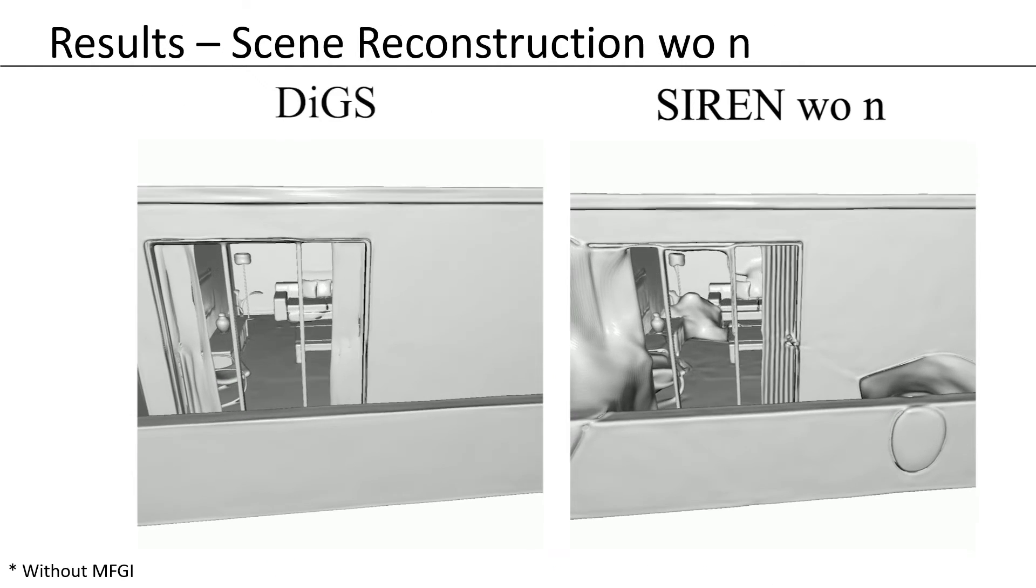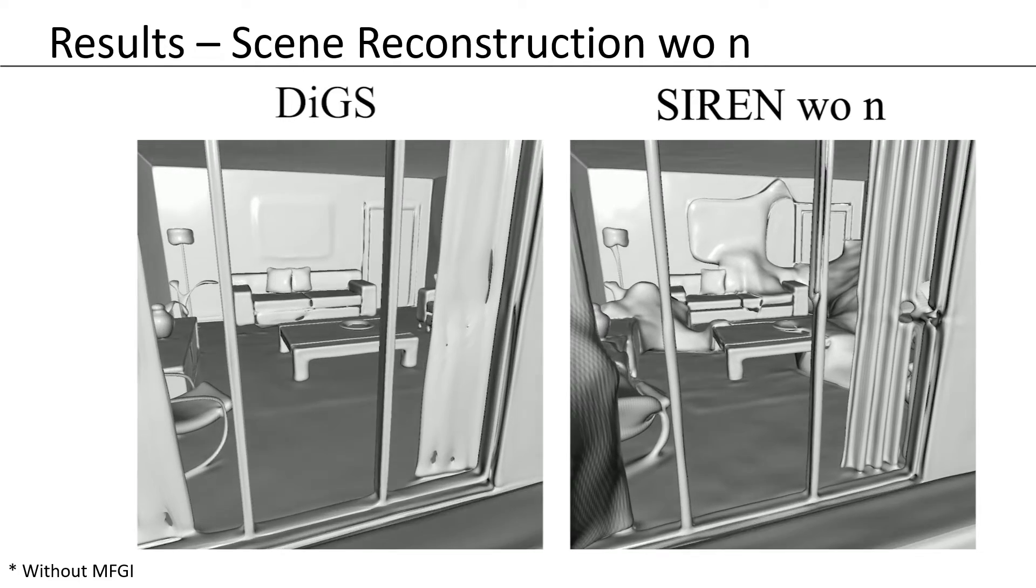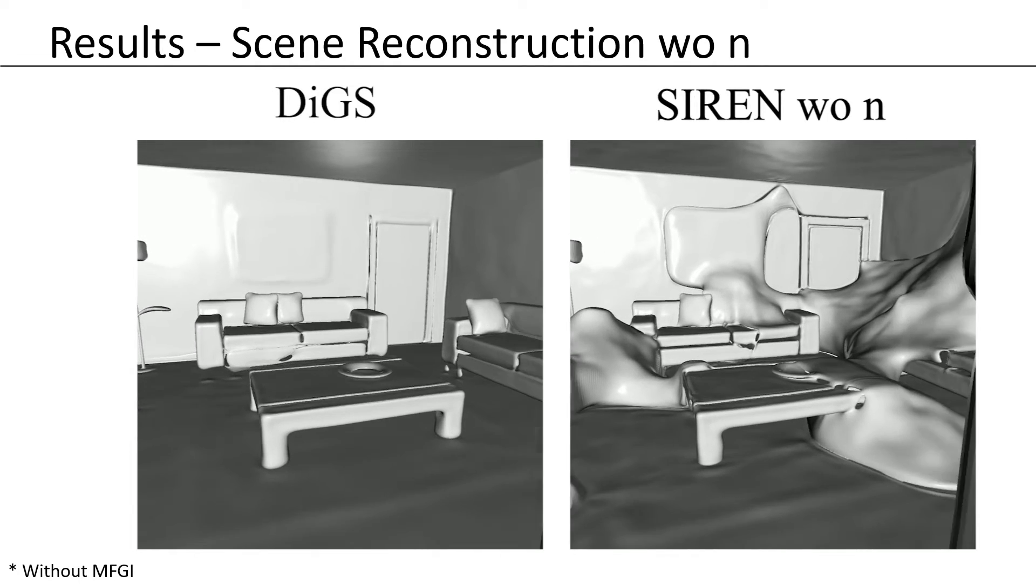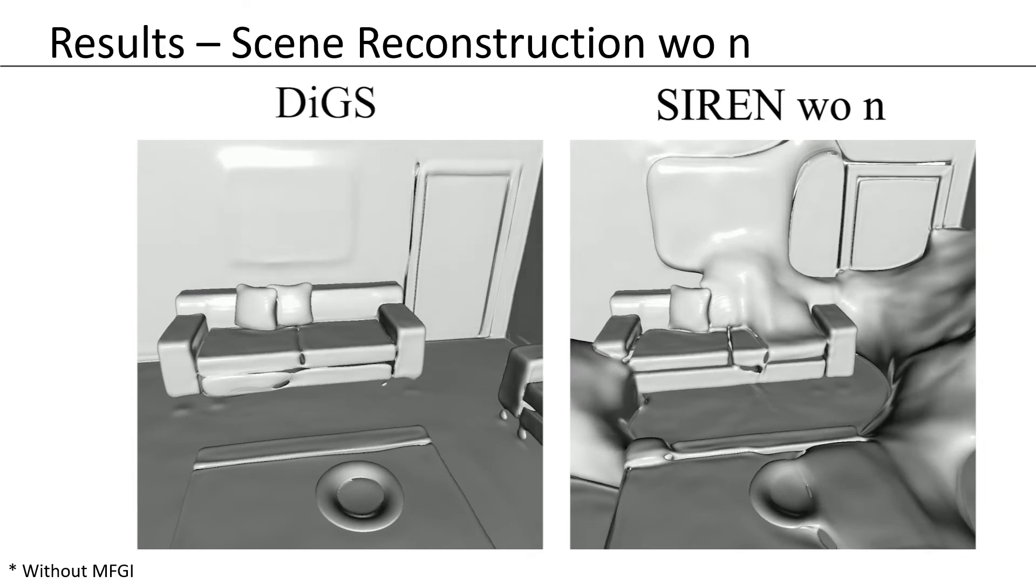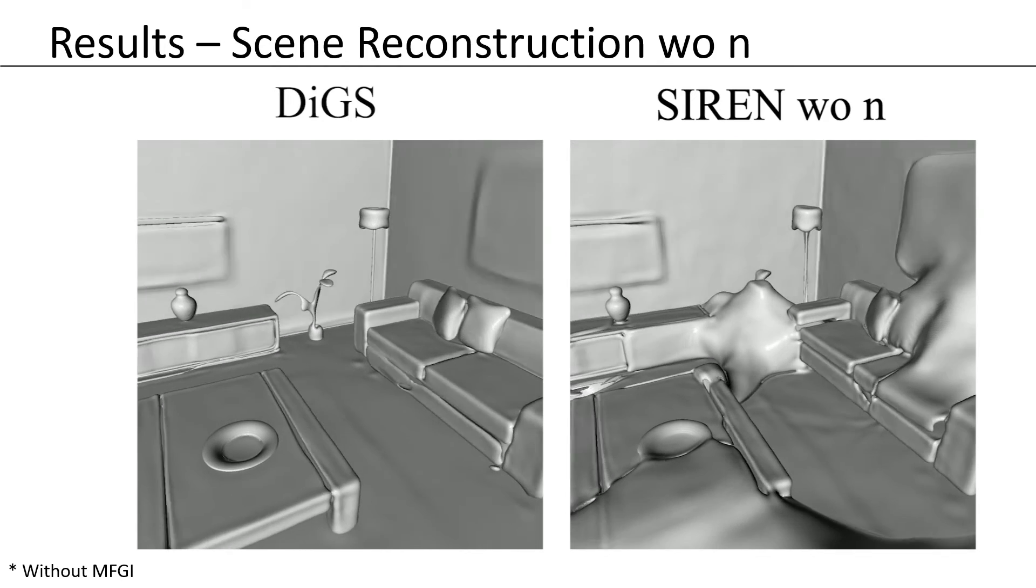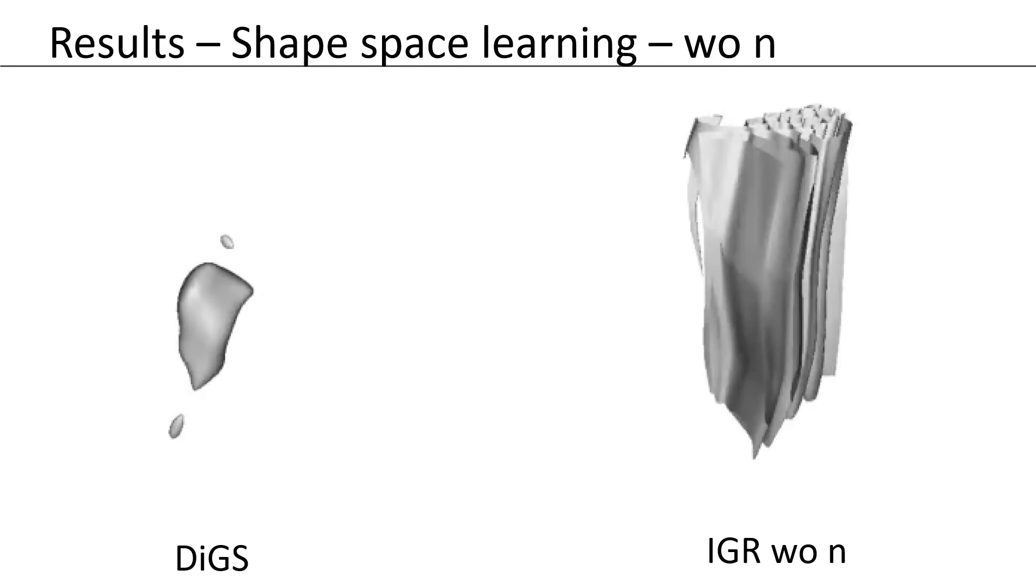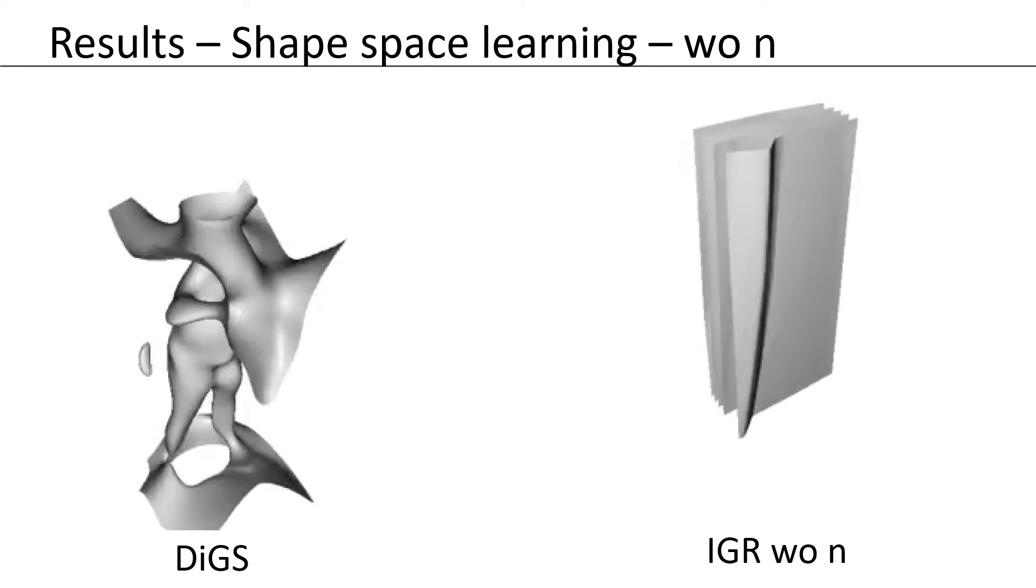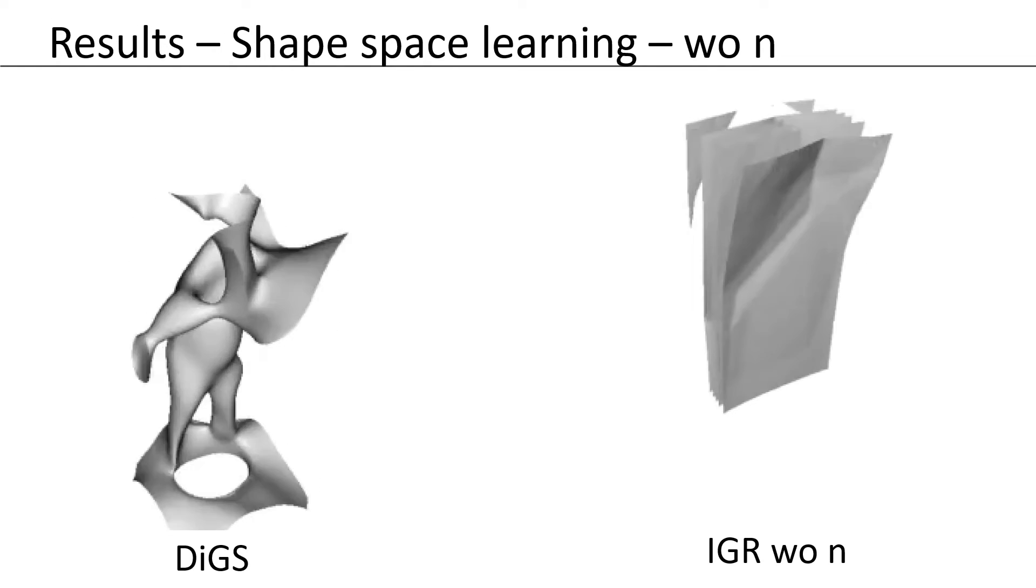For shape reconstruction, we can see a significant reduction in ghost geometries. Here, we can see the training progress on a single shape's reconstruction without normals.